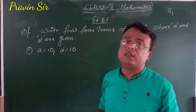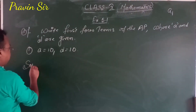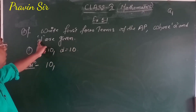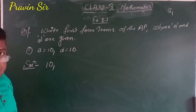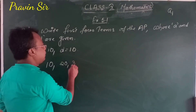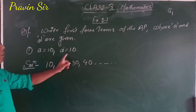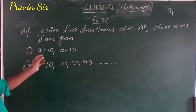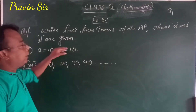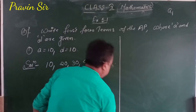The first sub-question: first term A is 10, common difference D is 10. The next term is found by adding 10 to the first term: 10 plus 10 is 20. Then 20 plus 10 is 30. Then 30 plus 10 is 40. So the four terms are 10, 20, 30, 40. This is the answer. First term, second term, third term, fourth term.